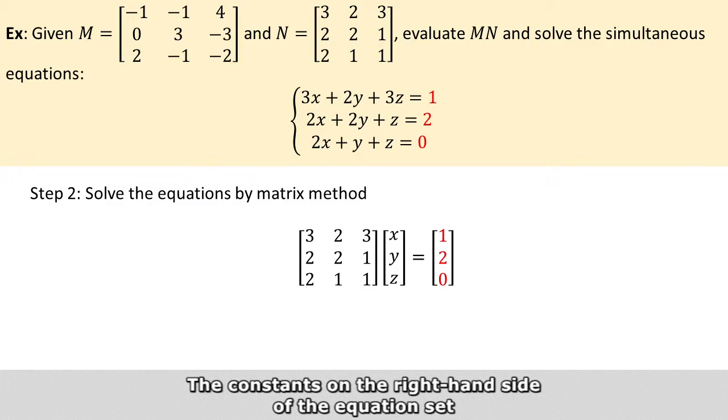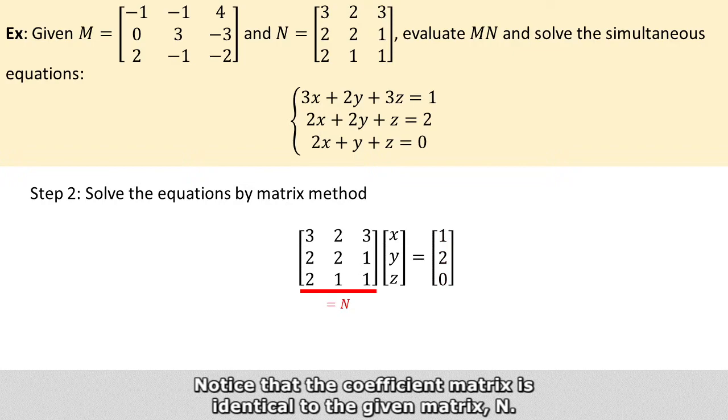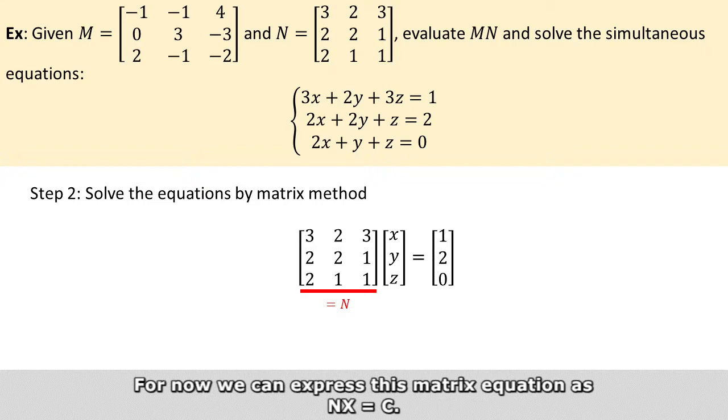The constants on the right-hand side of the equation set will appear as a vector on the right-hand side. Notice that the coefficient matrix is actually identical to the given matrix N. So for now we can express this matrix equation as Nx equals C.